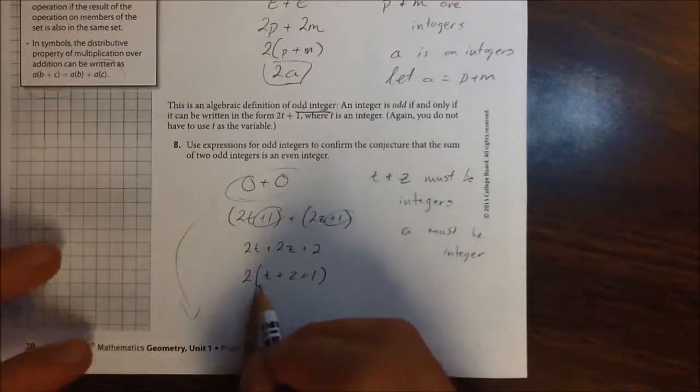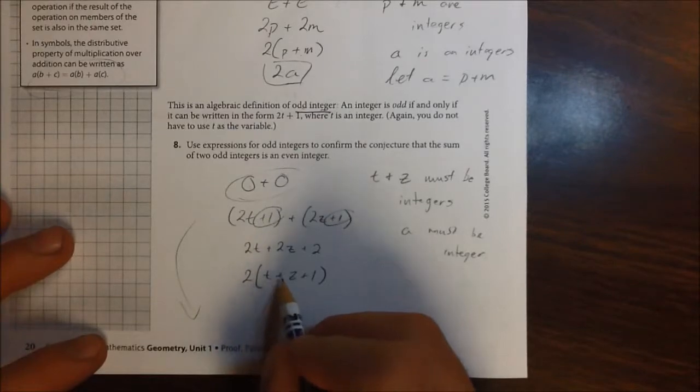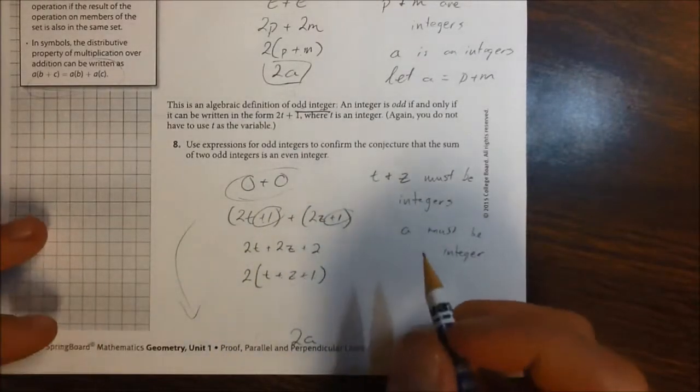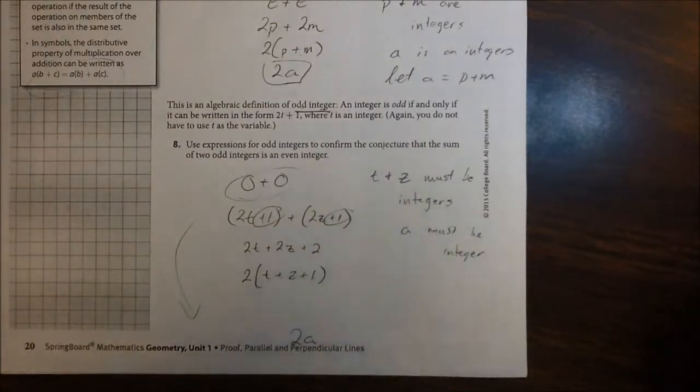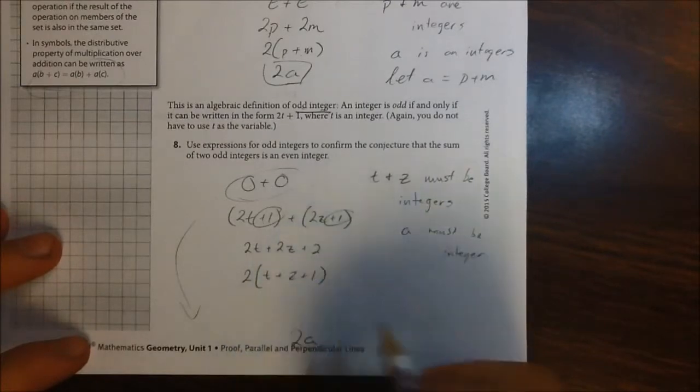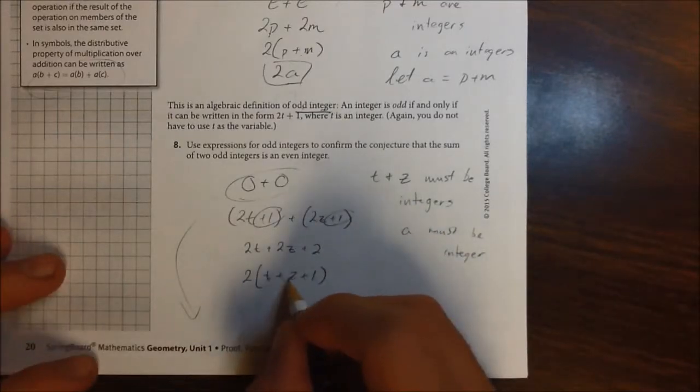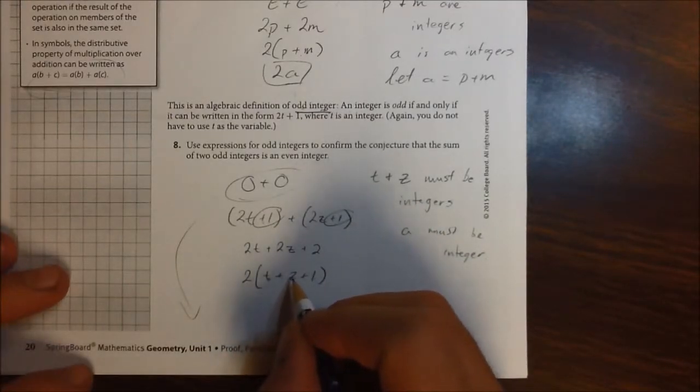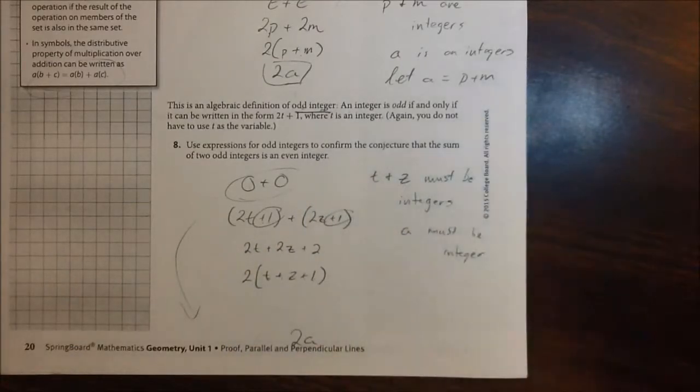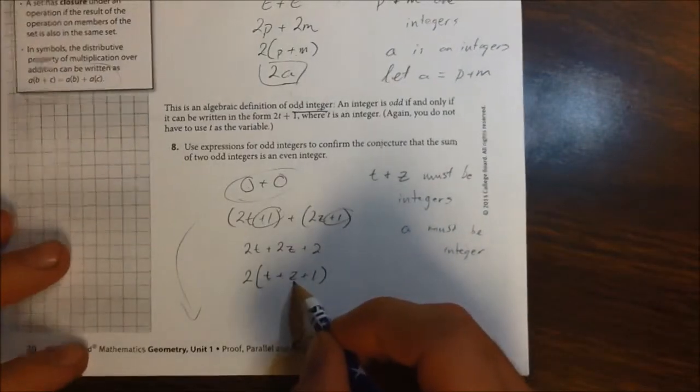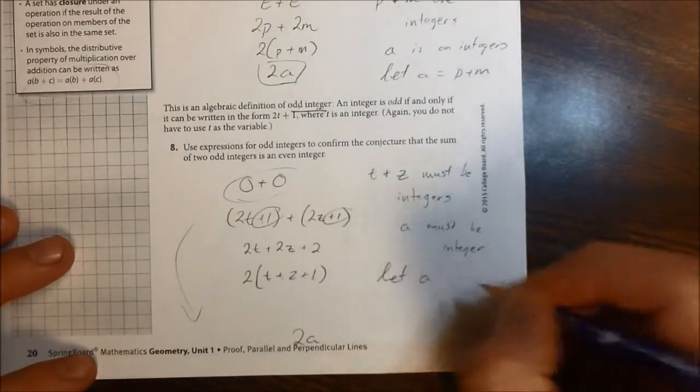After this, we've got 2 times the quantity t plus z plus 1. Again, because of the closure that this set has under the operation of addition, if I take two integers, t and z, it doesn't matter what they are, it can be any numbers, any integers they want to be. When we add them up, it's going to be another integer. t plus z, when we add those up, it's going to be another integer. And then when I add 1, it's just going to make it one more integer larger, and that's it. But it's still going to be an integer. So I'm going to let the variable a, which is an integer, equal to the quantity t plus z plus 1.